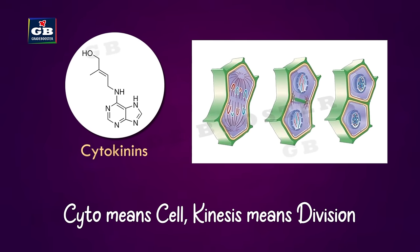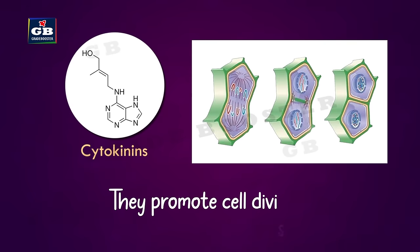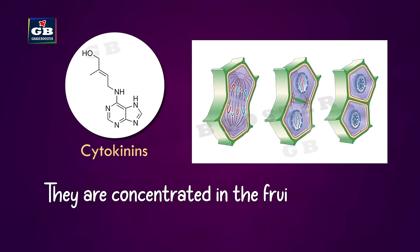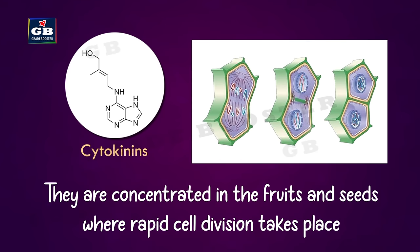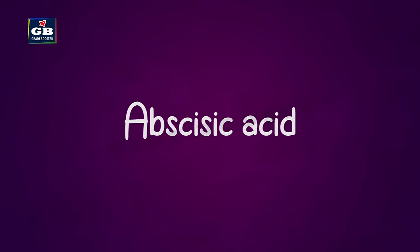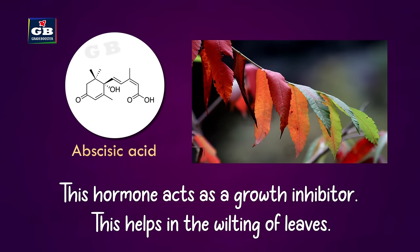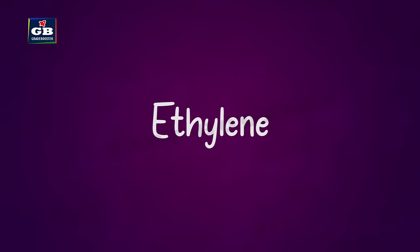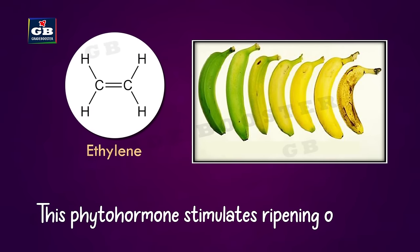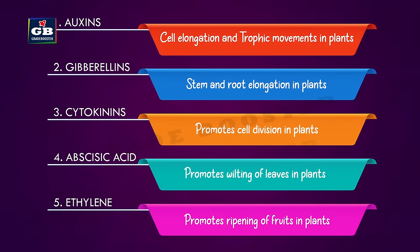Cytokinins — 'cyto' means cell, 'kinesis' means division — promote cell division. They are concentrated in fruits and seeds where rapid cell division takes place. Abscisic acid acts as a growth inhibitor and helps in the wilting of leaves. Ethylene stimulates the ripening of fruits.